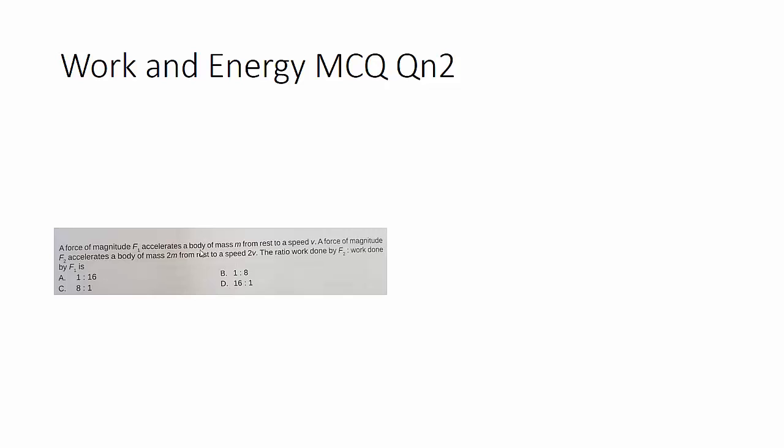This is question number 2. You find that there's two forces, and they give you the mass and some speed. Then they give you another force, but in this case, push 2 mass, 2m, and then to a speed of 2v. And they are asking you to find the ratio of force work done by force 2 to force 1.